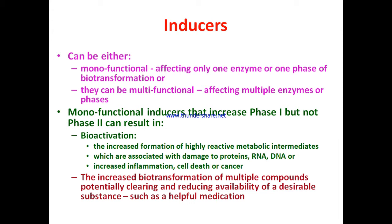These metabolic intermediates accumulate in the body and can damage proteins, RNA, or DNA, affecting body metabolism and potentially leading to mutation and cancer. Increased phase one with normal or decreased phase two can cause accumulation of metabolic intermediates, leading to increased inflammation, cell death, or cancer. Increased biotransformation can also reduce the availability of desirable substances such as helpful medication.